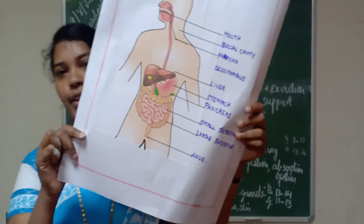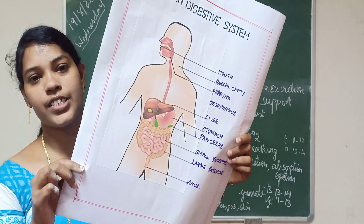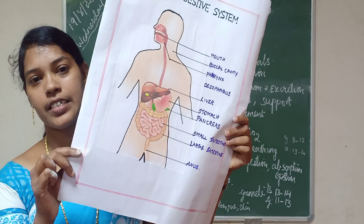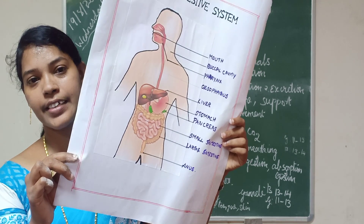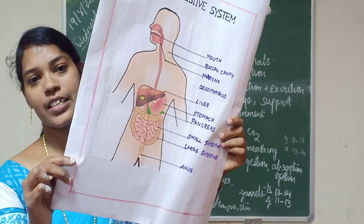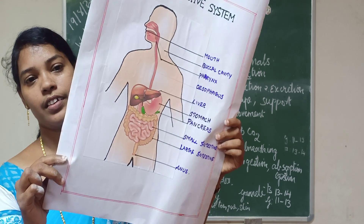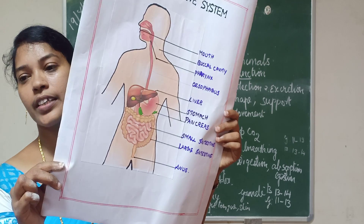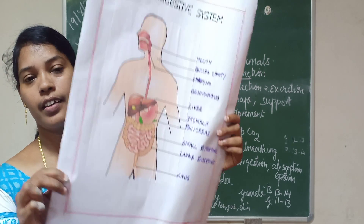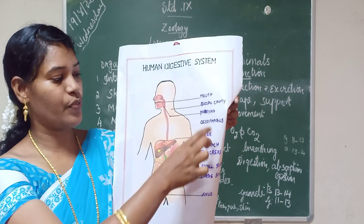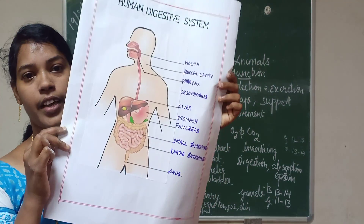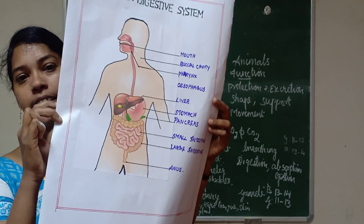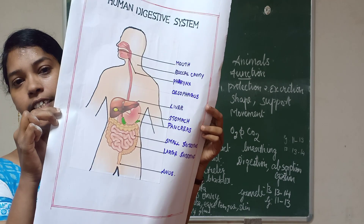This is the human digestive system. It consists of two sets of organs: digestive tract (also called alimentary canal) and digestive glands. The alimentary canal consists of: mouth, buccal cavity, pharynx, esophagus, stomach, small intestine, large intestine, and anus.